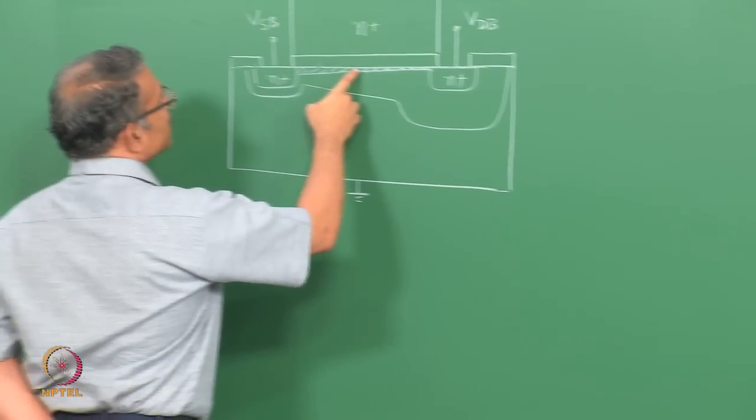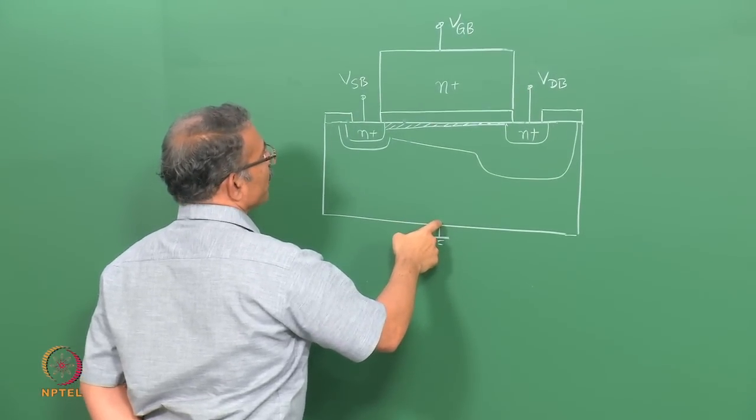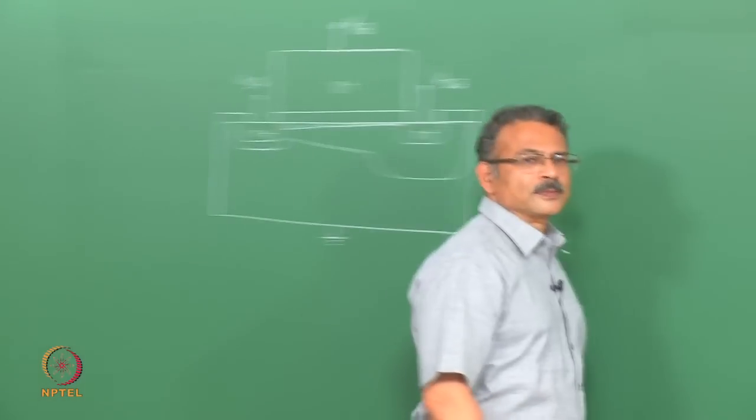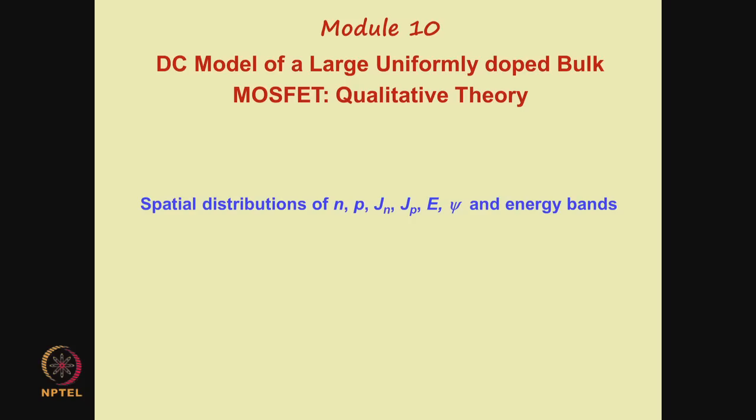Let us continue our qualitative discussion of the DC model of a large uniformly doped bulk MOSFET. In the previous lecture, we discussed the distributions of electrons, holes, the space charge, the electric field and the potential as a function of the y direction — that is the direction from the interface into the bulk. Now in this lecture, we continue and move on to other aspects of the spatial distributions of n, p, jn, jp, E, psi and energy bands.